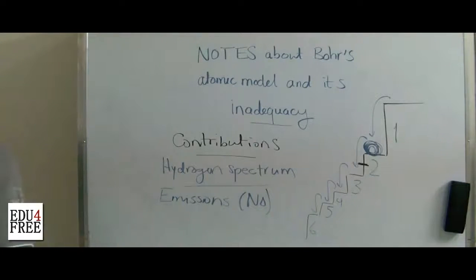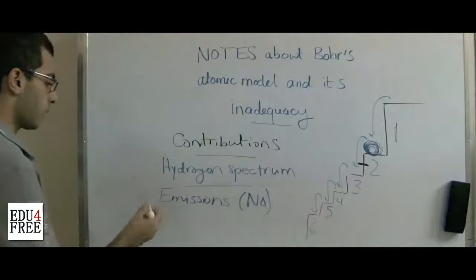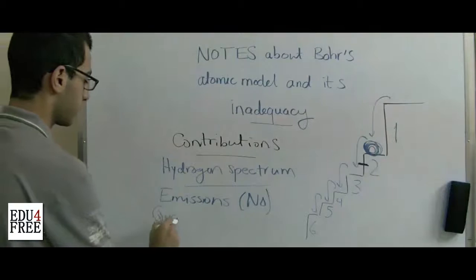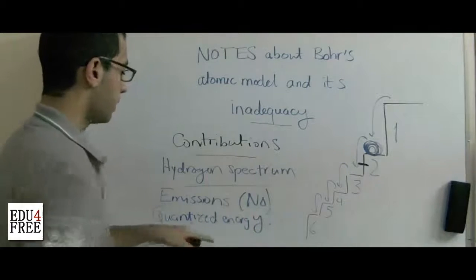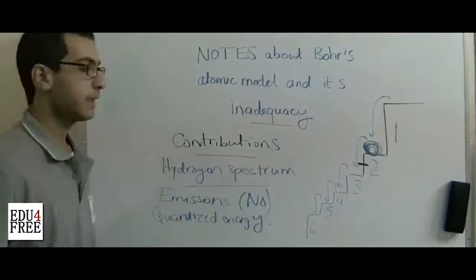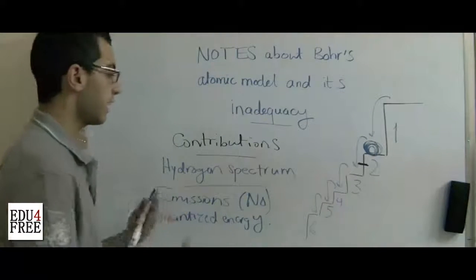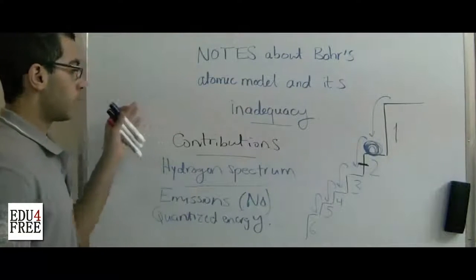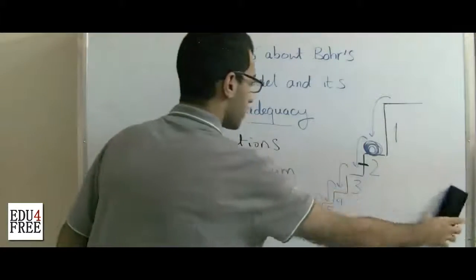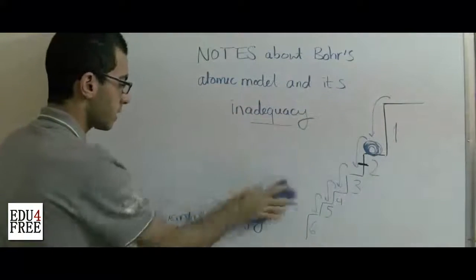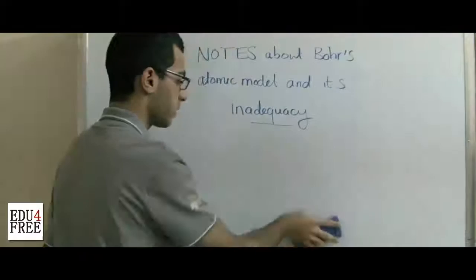And it introduced the idea of quantized energy for the electrons, so that each electron has a quantity of energy that can be calculated and known. So these are the contributions of Bohr's atomic model. But this model wasn't good enough to explain the atomic structure for some reasons.